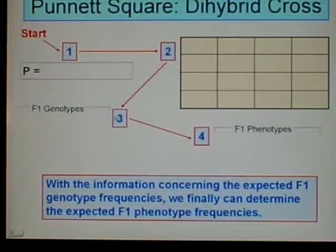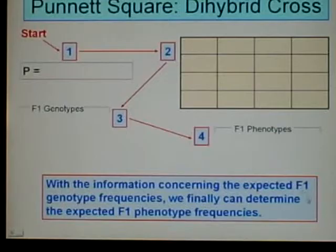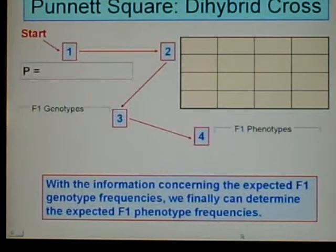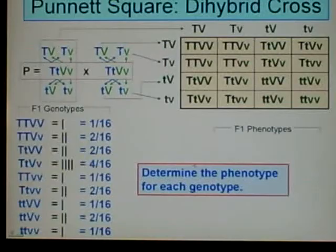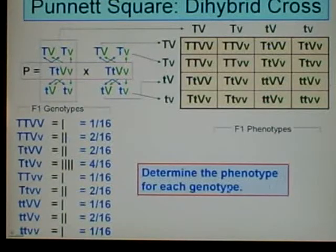Now we move on to the fourth and final step. With the information concerning the expected F1 genotype frequencies, we finally can determine the expected F1 phenotype frequencies. So our first step is to determine the phenotype for each genotype.